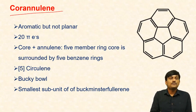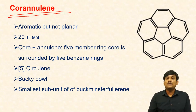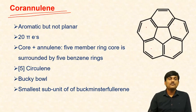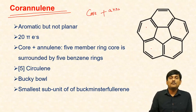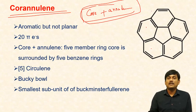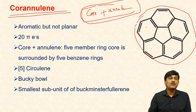Corannulene — this one is a very interesting compound. In this case you can find five benzene rings. The name corannulene is 'cor' plus 'annulene'. The benzene rings are fused in a cyclic manner — there is a fusing of benzene rings in cyclic manner. That's why it is called as corannulene.